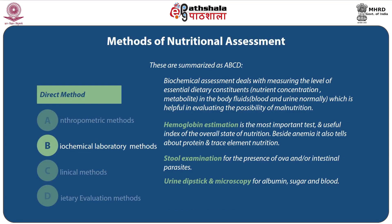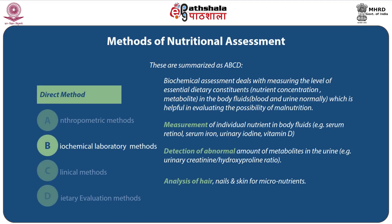Biochemical Laboratory Methods deal with measuring the level of essential dietary constituents in body fluids — blood and urine — which is useful in evaluating the possibility of malnutrition. Hemoglobin estimation is the most important test and a useful index of the overall state of nutrition. Besides anemia, it also tells about protein and trace element nutrition. Other tests include stool examination for ova and intestinal parasites, urine dipstick and microscopy for albumin, sugar and blood, measurement of individual nutrients such as serum retinol, serum iron, urinary iodine, and vitamin D, detection of abnormal metabolites in urine such as urinary creatinine and hydroxyproline ratio, and analysis of hair, nails, and skin for micronutrients.